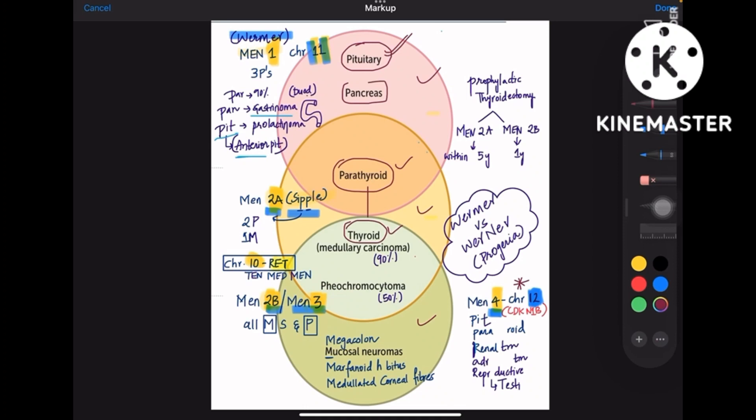Parathyroid and thyroid comes and topmost organ in our body or topmost gland is pituitary gland, like superior one. So first you have to place pituitary, and parathyroid and thyroid should be together. Then the leftover one is pancreas.